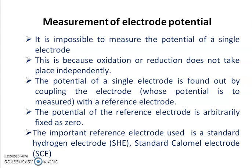Now the question is: how do we measure the potential across an electrode? The oxidation or reduction taking place across the electrode can never take place independently. That means an electrode can only undergo oxidation or reduction if both electrodes are connected externally. Since oxidation or reduction cannot take place independently, it is impossible to measure the potential of a single electrode.